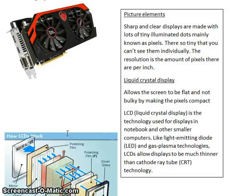Picture Elements. Although the picture on a computer monitor may look sharp and clear, it is made up of many illuminated dots known as picture elements or pixels. The dots are usually so tiny that you would not normally notice them individually — you just see the whole picture. If you could actually see the picture elements, the picture would look jagged.